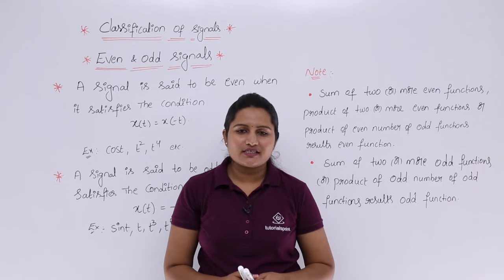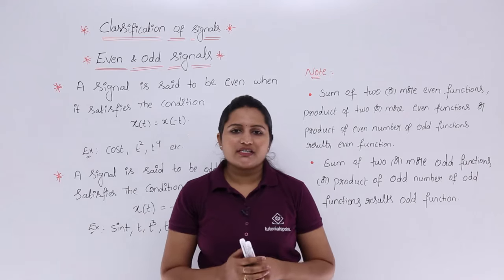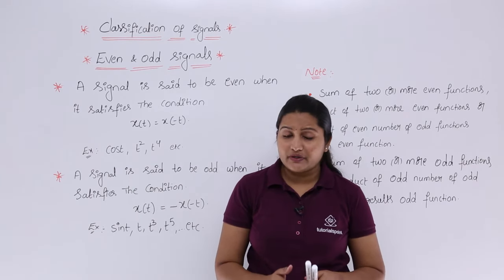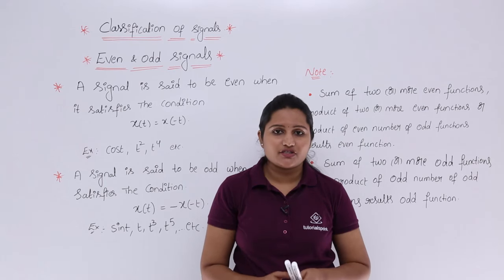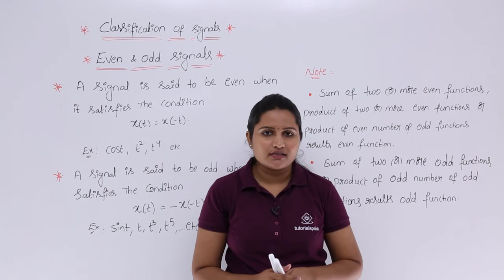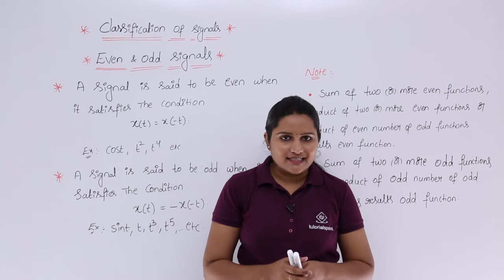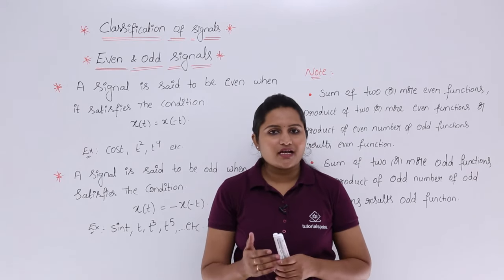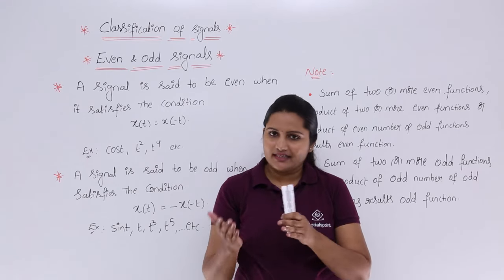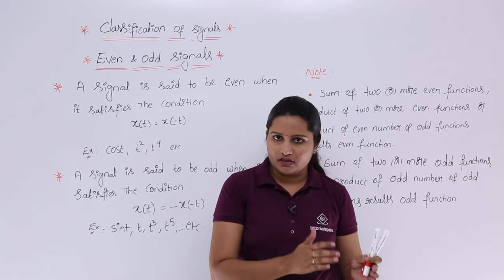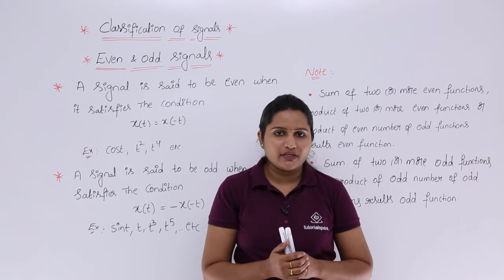In this video we are going to discuss about even and odd signals. You know about even and odd signals — in a previous classification topic we already discussed a small introduction. An even signal is a signal where if it satisfies the condition x(t) = x(-t), that means the reflected version of the signal is equivalent to the given signal, then that is said to be an even signal.